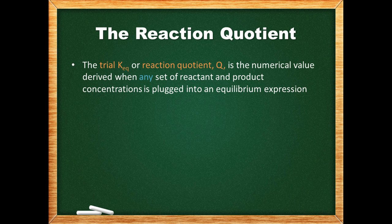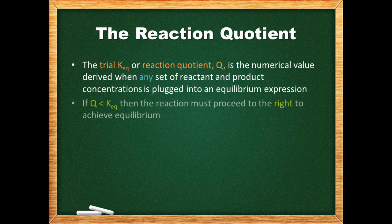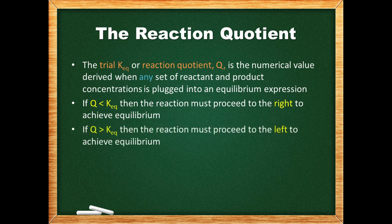The trial K_eq or reaction quotient Q is the numerical value derived when any set of reactant and product concentrations is plugged into an equilibrium expression. This value can tell us if a reaction is at equilibrium and, if not, the direction in which the reaction will proceed to achieve equilibrium. If the trial K_eq is less than the actual equilibrium constant, then the reaction must proceed to the right. The reaction quotient's numerator must increase and its denominator decrease until the quotient itself has risen to equal the equilibrium constant. Likewise, if the trial K_eq is greater than the actual equilibrium constant, the reaction must proceed to the left.